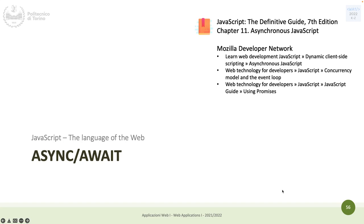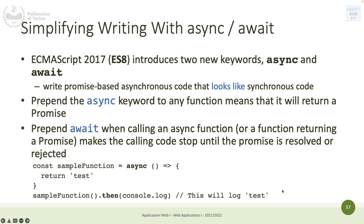We were starting to speak about async and await — a couple of keywords that always must go together. We will see how they are a way to make asynchronous code look like synchronous JavaScript code. In ECMAScript 2017, something a little bit more recent than promises, the standard body for JavaScript introduced these two new keywords that further help simplify the writing and understandability of asynchronous JavaScript code.